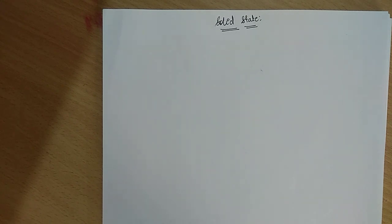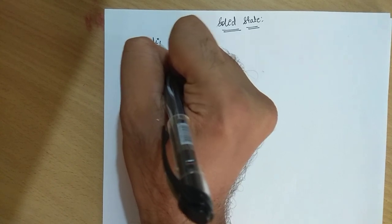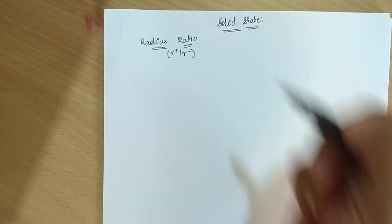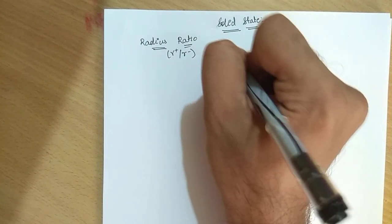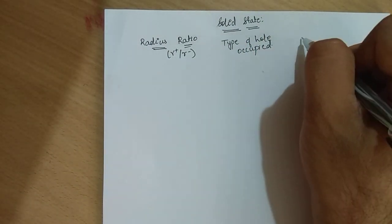Hello students, we will continue further with solid state. In the previous video, we had seen what should be the radius ratio so that an octahedral hole is occupied, what should be the radius ratio so that a tetrahedral hole or a cubic hole is occupied, and we have seen the position of every hole in a crystal structure. So let's summarize that. The radius ratio is normally r⁺ to r⁻, the ratio of radius of cation to anion. The table has columns for type of hole occupied and coordination number.